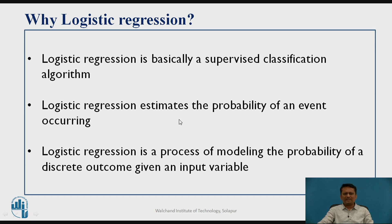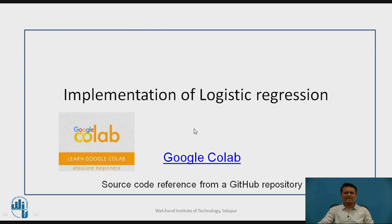Let us understand the implementation of logistic regression. A cloud-based Google Colaboratory approach will be used for implementation. The source codes are referred from a GitHub repository, and the datasets are taken from Kaggle. Let us move to the implementation part.